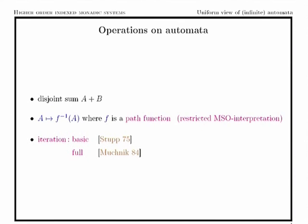Which constructions will we make on automata — which kind of operations do we need? Quite usual ones: at least the first one is disjoint sum. The second one — formally, when we work with finite automata we often need to connect them — so we will use inverse path functions. This is almost like a kind of logical interpretation using monadic second-order logic, but in some restricted fragment of MSO, because if we take the whole power of MSO then some results couldn't be obtained.